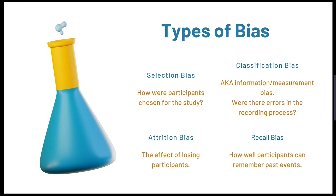Our final bias is recall bias, which can occur in a retrospective study and happens if the participants have difficulty recounting a past event. In this case the researchers should source additional evidence.